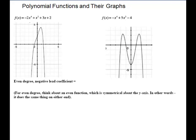Our next two have an even degree, so they would be w's except the leading coefficient in both cases is negative, so it turns them upside down. Instead they look like m's. They have fall to the left, fall to the right. These graphs, when they're even, are symmetric around the y-axis. So the ends are going to look the same on an even graph — falling on both sides, or rising on both sides.